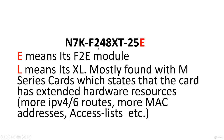To summarize: N7K means 7000 series; F means F-series; 2 means second generation; 48 is the total number of ports; X means the largest port capacity is 10GE; T means port type RJ45, the normal LAN connector for Cat6 cable; 2 is the fabric module version — the interconnect between line cards; and if a workstation on one line card sends data to another, it passes through the fabric module.